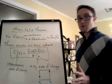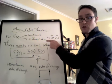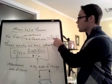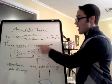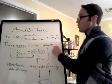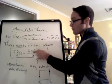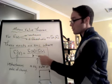So the mean value theorem says for a continuous differentiable function, on a closed interval [a,b], there exists an x=c, some x value between a and b, where f'(c) is equal to [f(b) - f(a)] / (b - a).